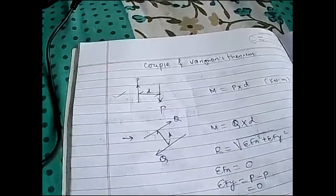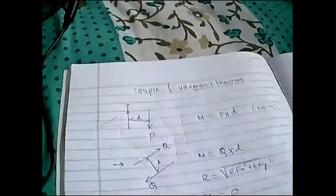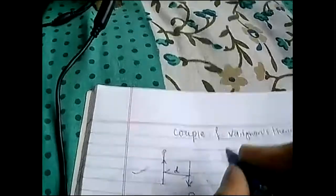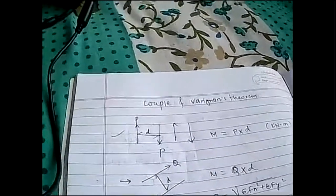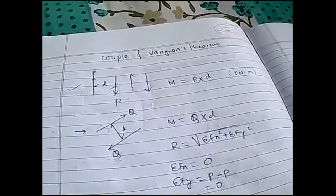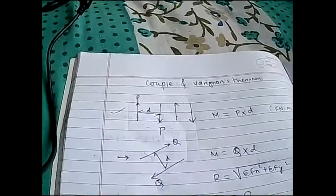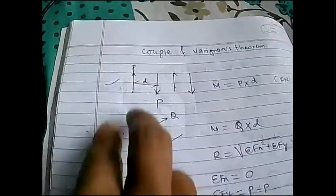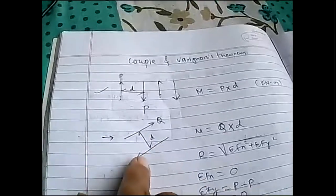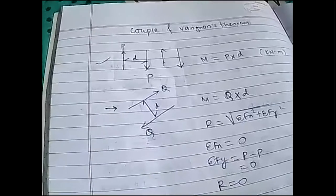The moment of a couple is p into d. A couple cannot be balanced by a single force. If I add one more force to this system, it cannot get balanced. To balance it, I must add a moment — meaning two forces that form a moment can balance it. The moment of a couple is independent of the moment center: whether I place the reference point here or anywhere on the system, it has the same effect. Also, if I shift the couple anywhere — downward, horizontally, or tilted — it does not change its effect, because it is ultimately giving a moment and its magnitude cannot change.